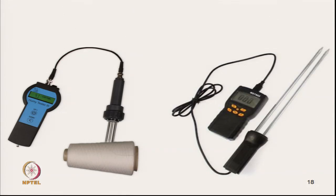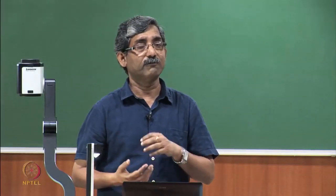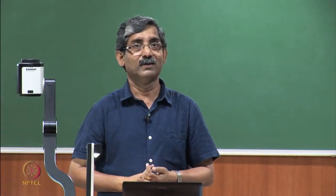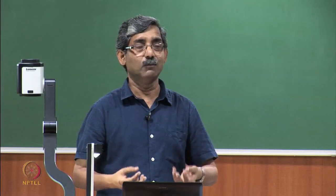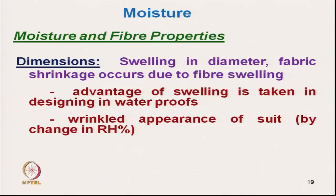Different methods are available for moisture measurement. Now for fibre characteristics: fibre properties are affected by the presence of moisture. The first is swelling — most fibres swell after receiving moisture — and fabric shrinks during moisture absorption. Shrinkage of fabric occurs due to the swelling of the yarn.